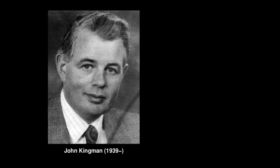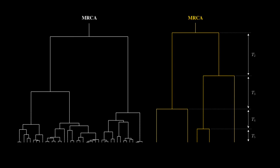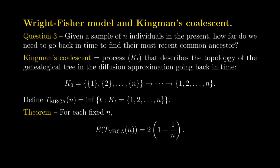Here is a picture of mathematician John Kingman, who introduced this stochastic process tracking genealogy in the diffusion approximation of the Wright-Fisher model. On the right is a diagram like the one I drew, showing the times between coalescing events that we'll study to compute the expected time to the most recent common ancestor. On the left is an actual computer-generated simulation of Kingman's coalescence.